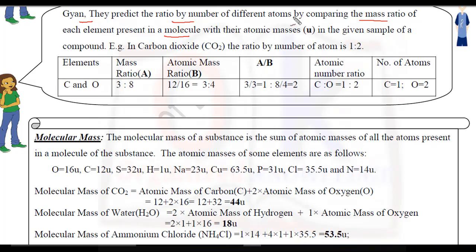For the different atoms in a molecule, we look at the mass ratio and compare that ratio with their atomic mass in the given sample of a compound. For example, carbon dioxide — the ratio by number of atoms is 1:2. The compound is CO2 and the elements present are carbon and oxygen. Now how do we find the mass ratio?